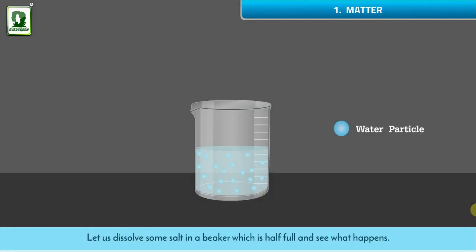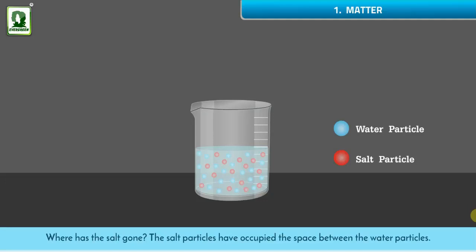Let us dissolve some salt in a beaker which is half full and see what happens. We find that there is no increase in the level of water in the beaker. Where has the salt gone? The salt particles have occupied the space between the water particles. Thus, matter is not continuous.